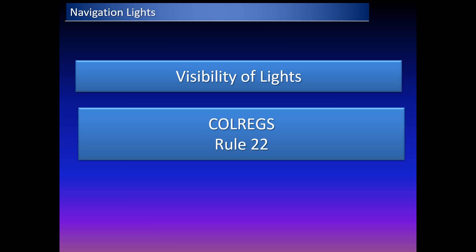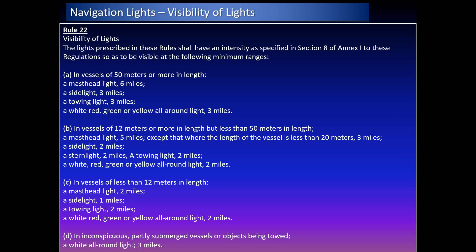Anchor lights and working/warning lights required to be displayed have the same characteristics as all-round or flashing lights as applicable. Rule 22 of the collision regulations covers visibility of lights. Depending on the length of your vessel, the masthead light, sidelights, towing light, and all-round light must be visible at minimum ranges — for vessels of 50 meters or more, those are six miles, three miles, three miles, and three miles respectively.